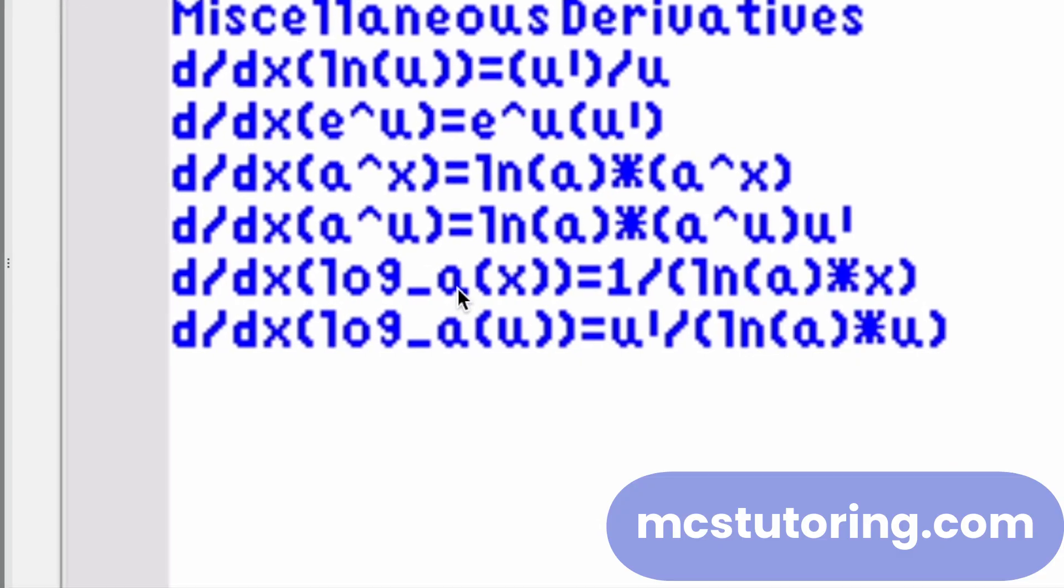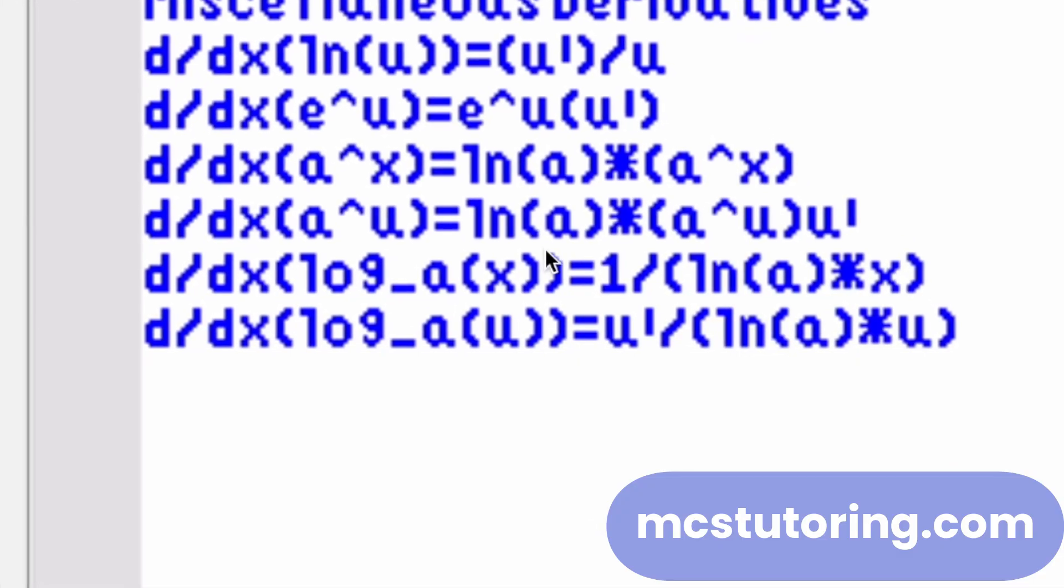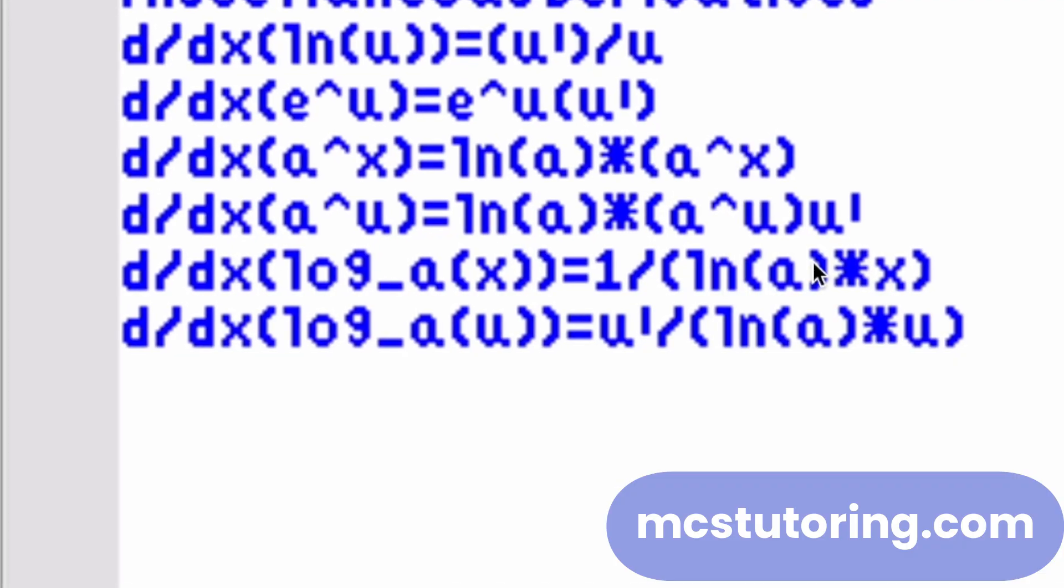This is ln of A times A to the U times U prime. And then log, if this is considered like log base A of X, it's one over ln of A times X. So just keep that in mind. That's what all that stuff means.